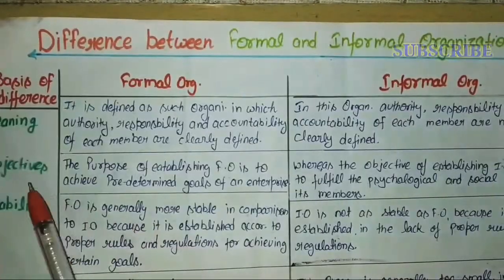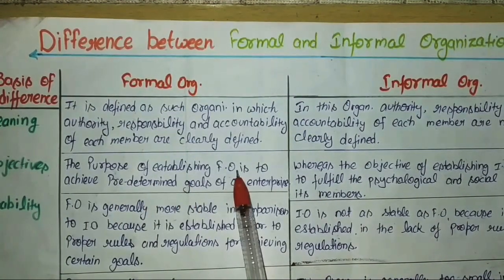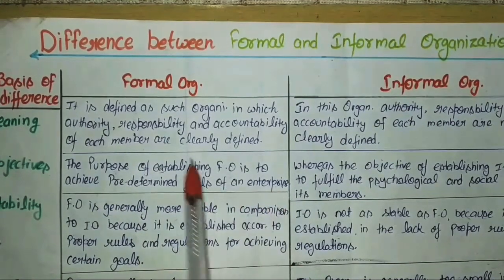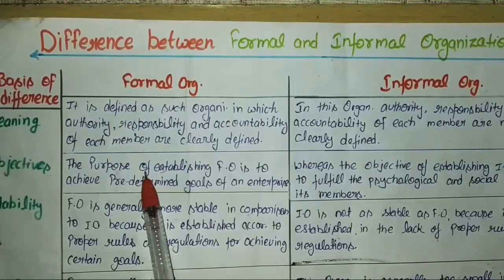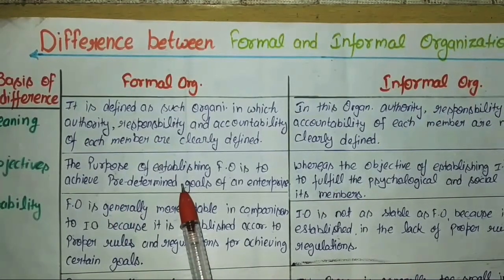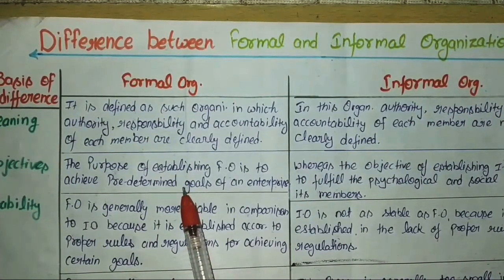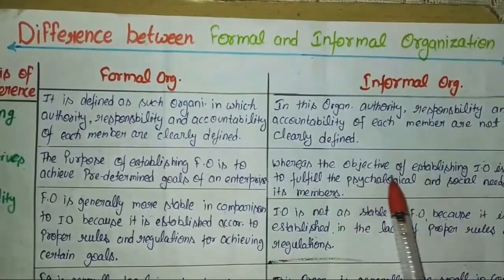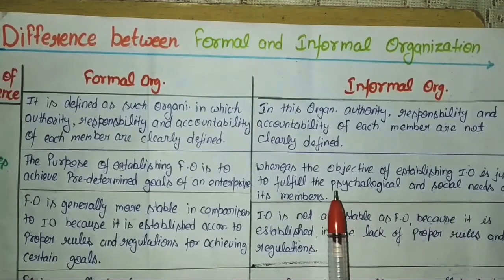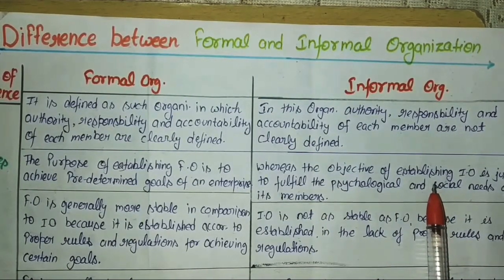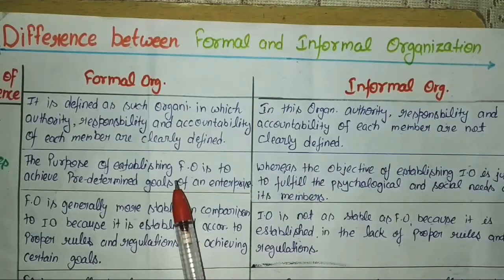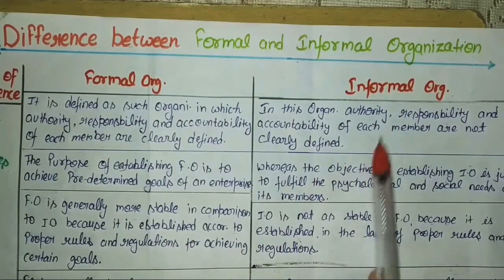Regarding objectives: the purpose of establishing a formal organization is to achieve pre-determined goals of an enterprise. The main purpose of creating a formal organization is to achieve the pre-determined goals and objectives of the organization. Whereas the objective of establishing an informal organization is to fulfill the psychological and social needs of its members. Informal organization has no specific objective — it is formed among members of the formal organization itself to fulfill their social and psychological needs, as informal organization exists within formal organization.